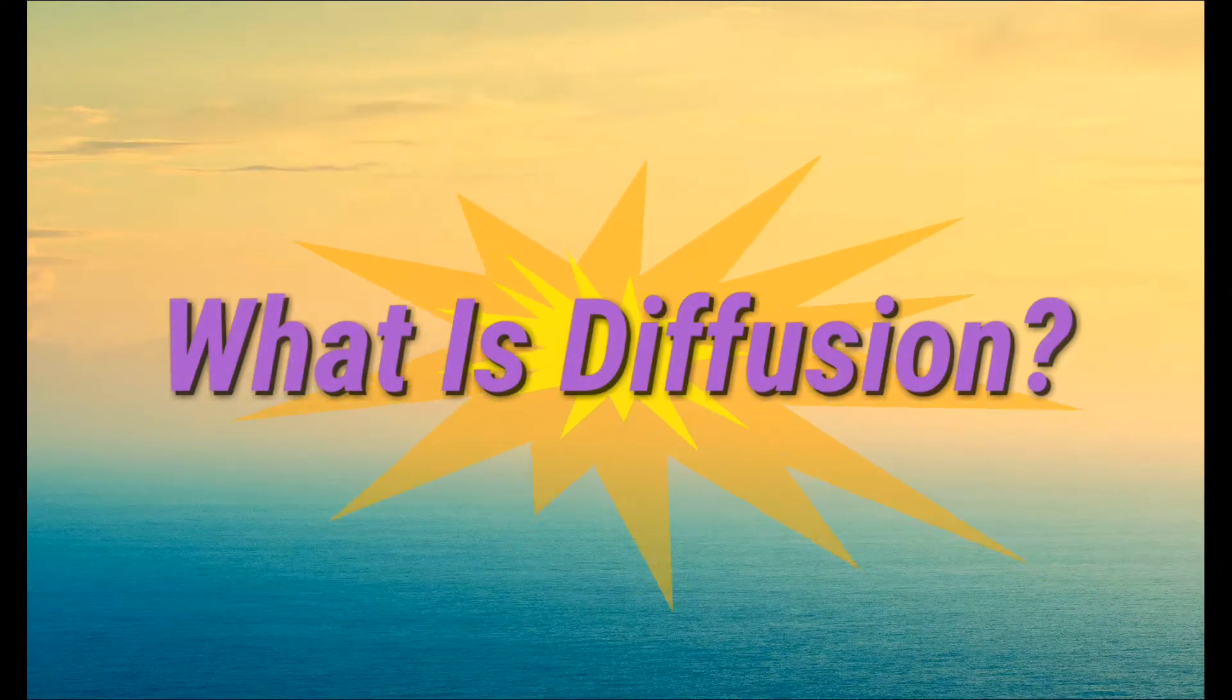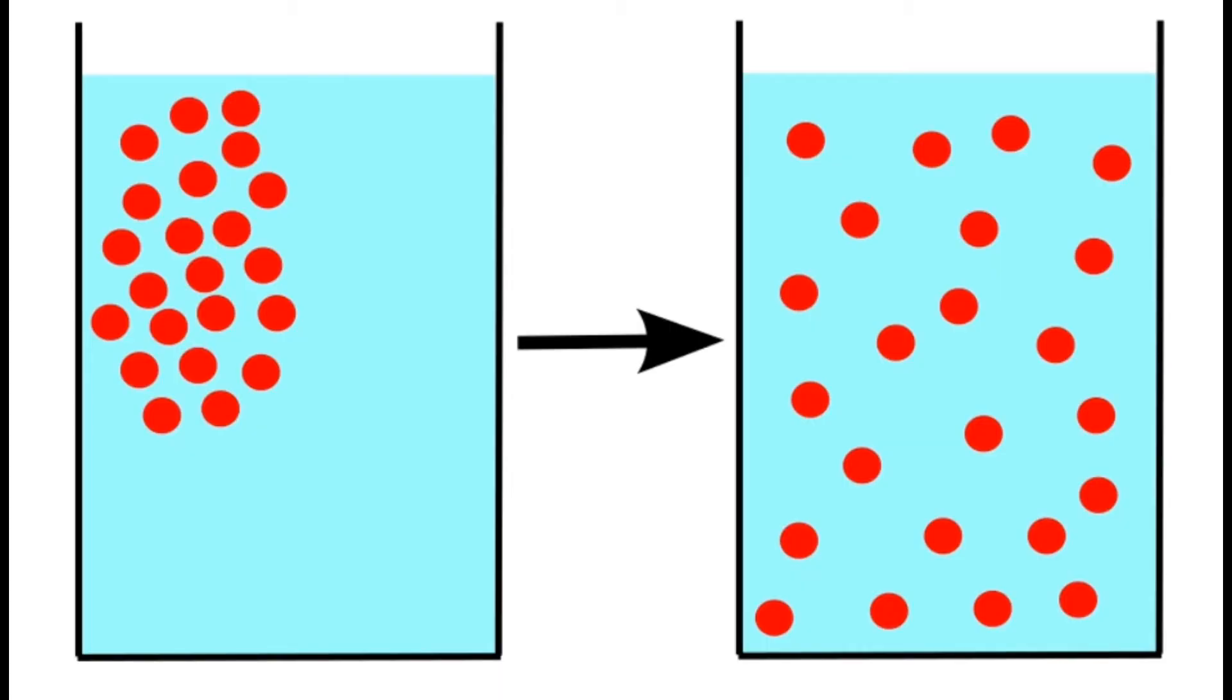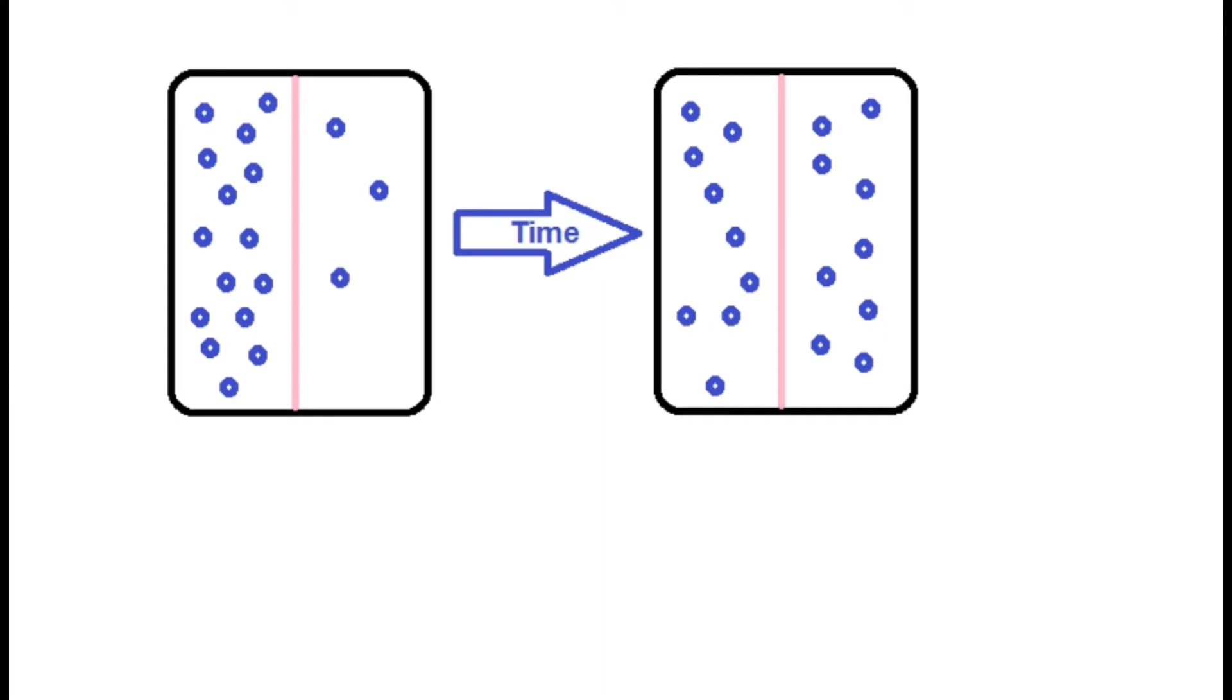What is Diffusion? Diffusion is the movement of molecules from a region of higher concentration to a region of lower concentration. The molecules collide with each other and change the direction.